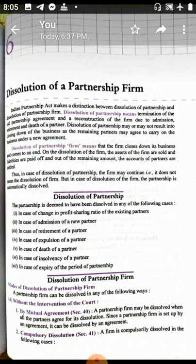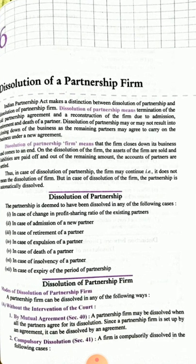The partnership is deemed to be dissolved in many ways — such as the change in profit sharing ratio, admission of a new partner, retirement of a partner, expulsion of a partner, death of a partner, insolvency of a partner, and expiry of the period of the partnership.